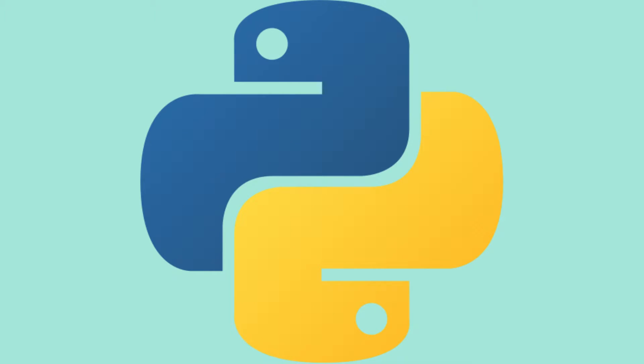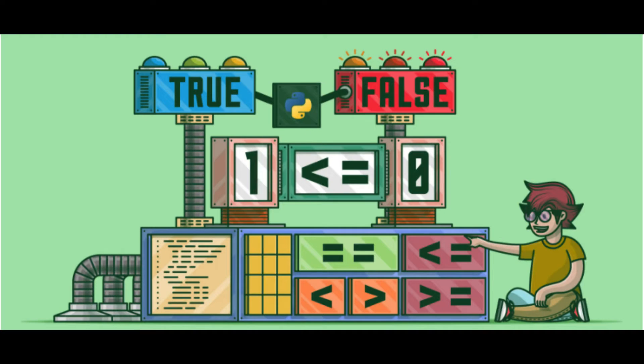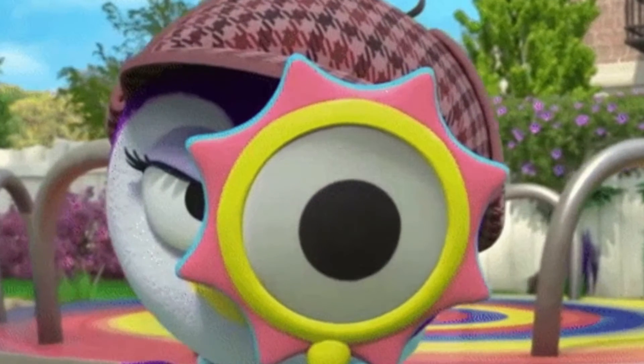In Python, we have several data types, including integers, floating-point numbers, strings, and booleans. Let's take a closer look at each of these data types.